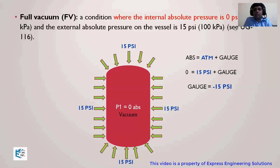760 mm of Hg closely corresponds to the full vacuum condition. That's why full vacuum means the absolute pressure inside is zero and the absolute pressure outside is 15 psi. Note that the words used are absolute pressure, not gauge pressure — please remember that.